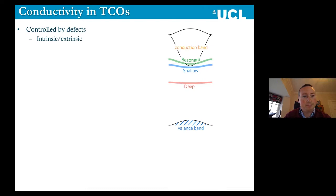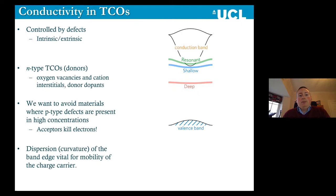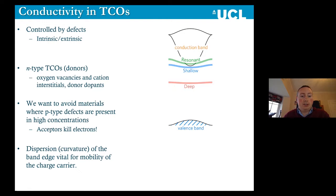Conductivity in transparent conducting oxides is controlled primarily by defects — they can be intrinsic defects, ones that are native to the material, or extrinsic defects where you add in impurities which can add charge carriers. For N-type transparent conducting oxides, which most industry materials are, you are looking for donor defects — defects that will add an extra electron into the system. Typically for intrinsic defects, these would be oxygen vacancies or cation interstitials; or if you're trying to add an impurity, you're looking for donor dopants. You want to avoid materials where there are p-type defects in high concentrations, because every p-type defect will form a hole which will kill the electrons in your system.